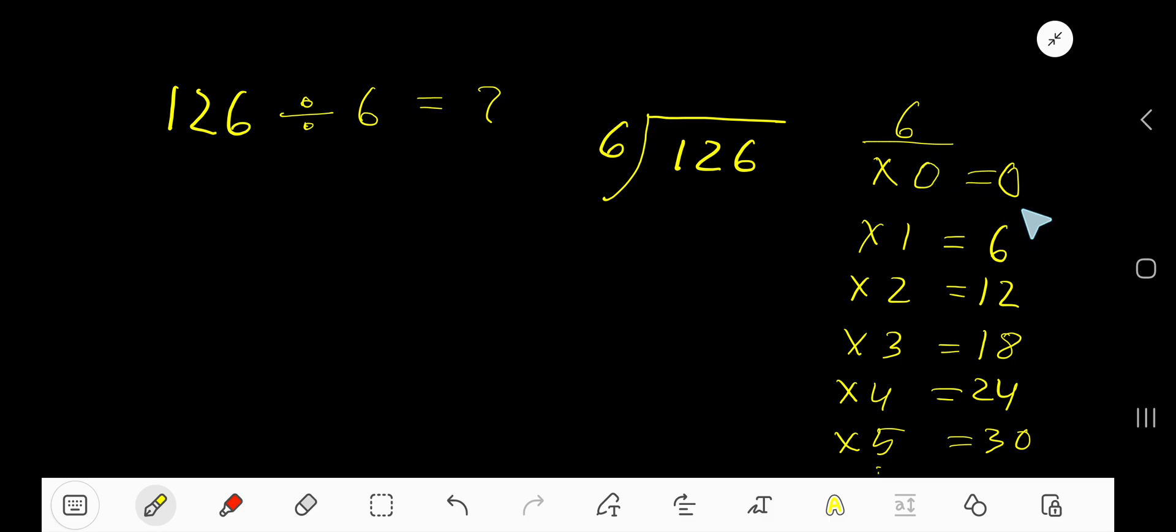...with the previous step: 0 plus 6 is 6, 6 plus 6 is 12, 12 plus 6 is 18, 18 plus 6 is 24, 24 plus 6 is 30. Okay, so 6 goes into 1, our current dividend, 0 times, as 1 is less than 6. 0 times 6 equals 0. Subtract and bring down the 2.